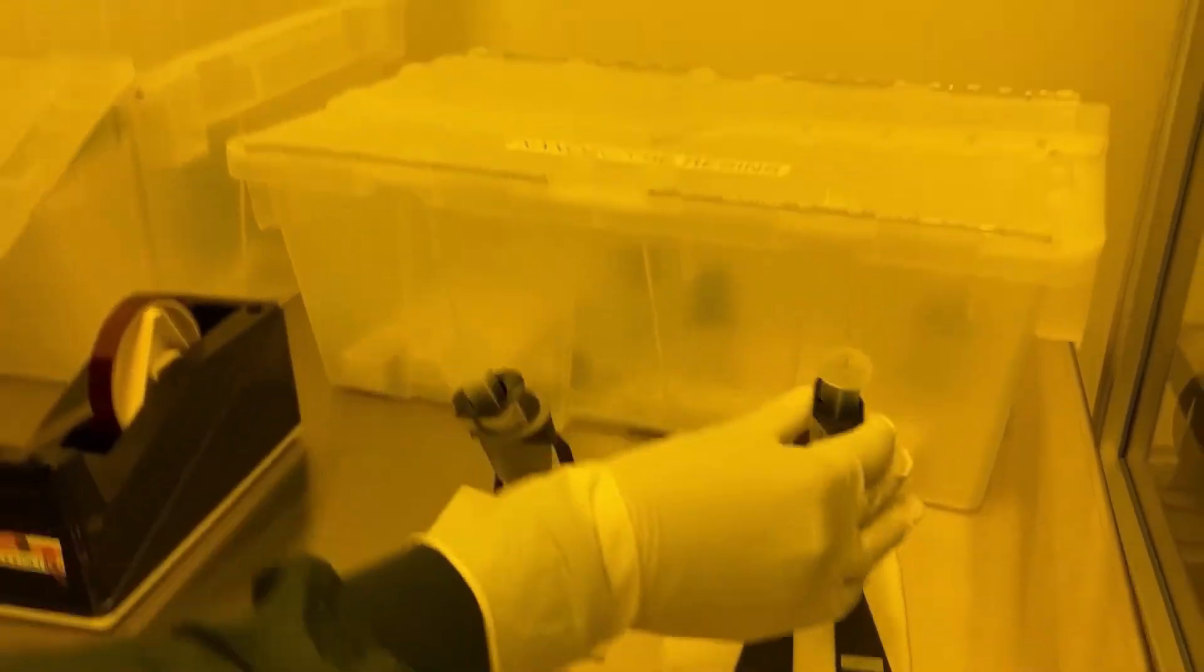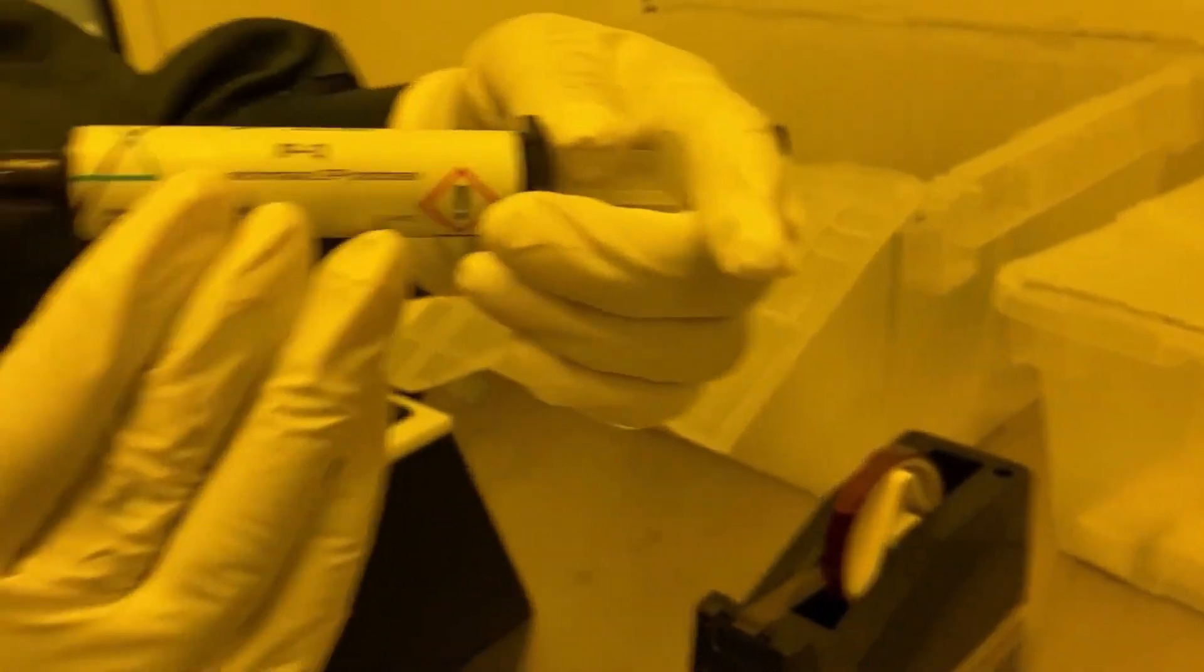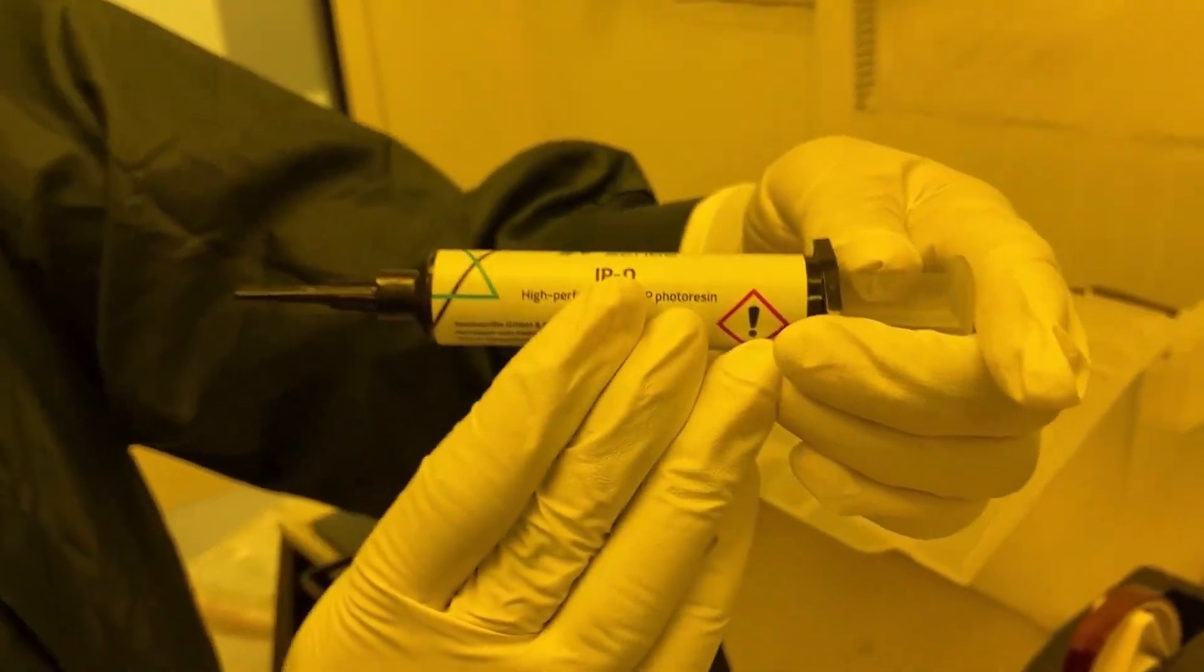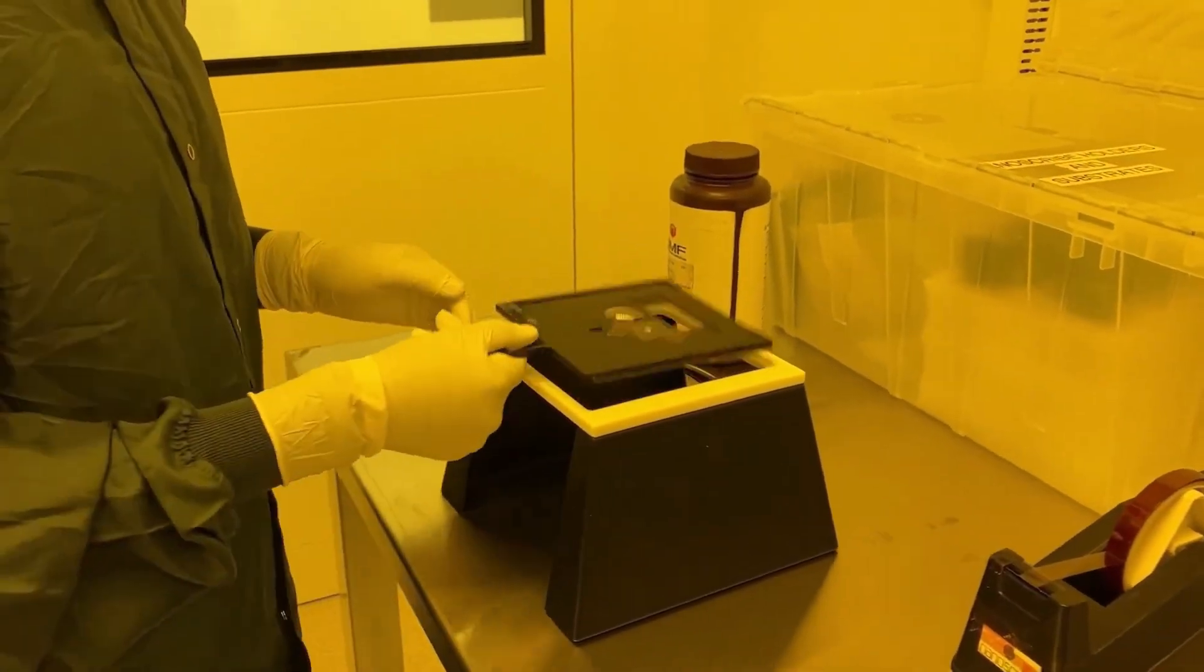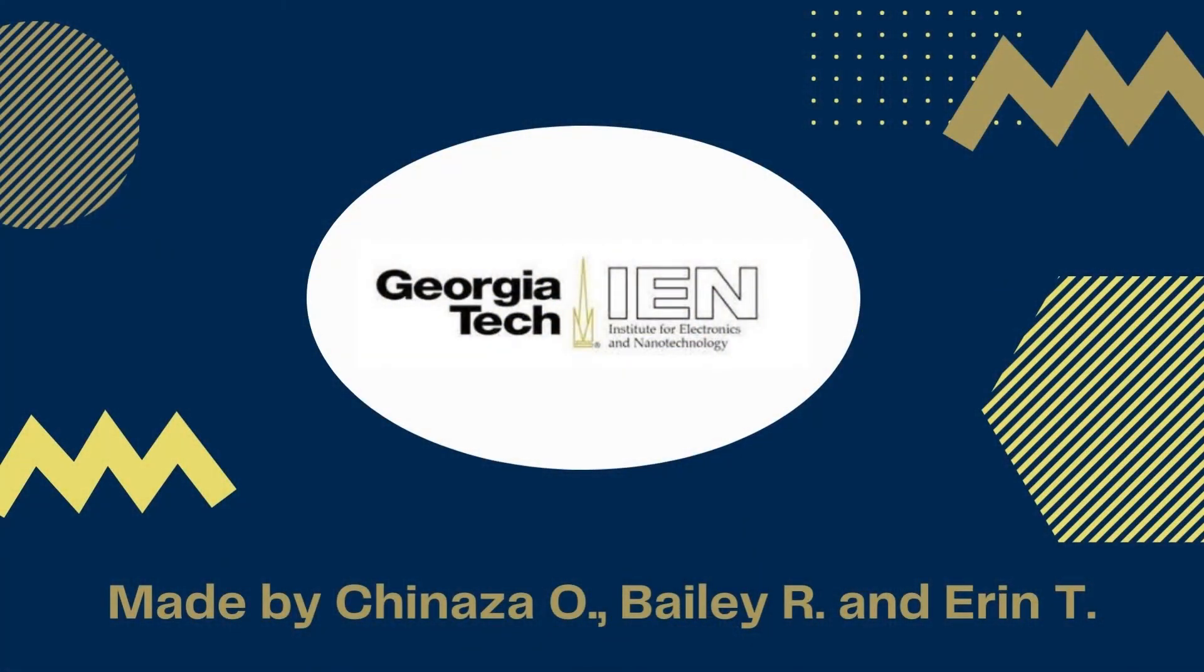If you are using IPS or IPQ, they are readily available through this setup on the table. If you are using a different resist, you will find it in the box behind labeled nanoscribe resins. Now your sample is ready. Thank you for watching.